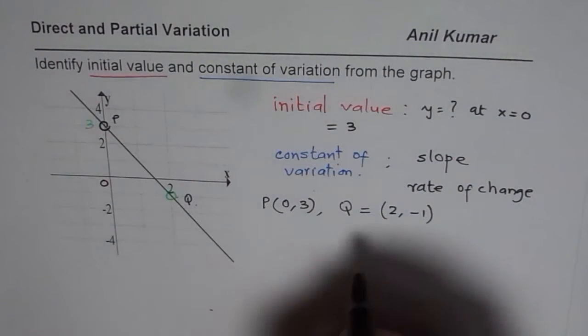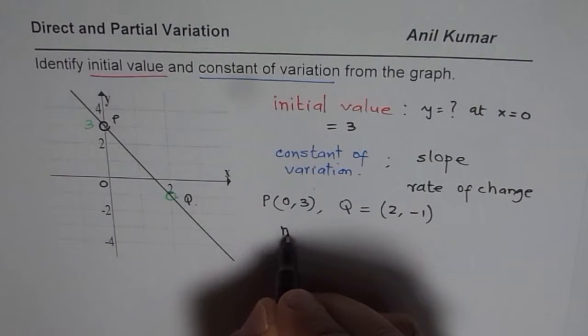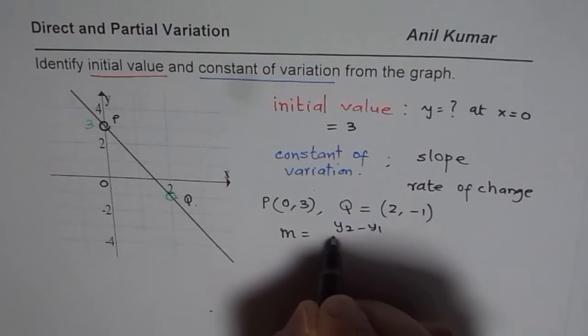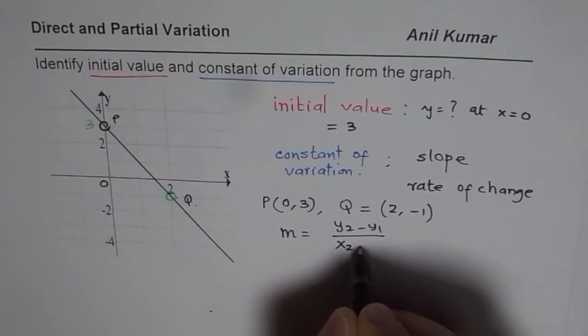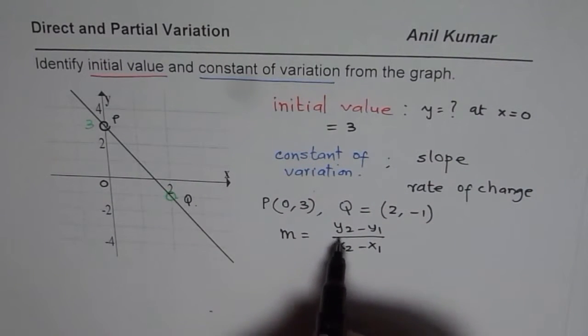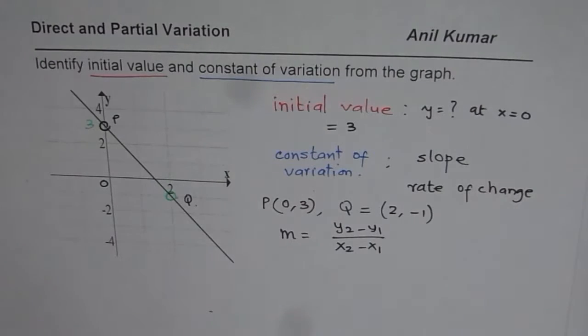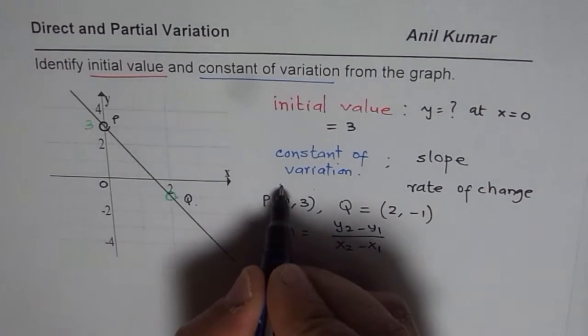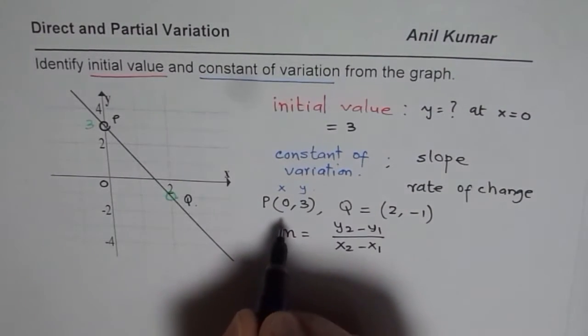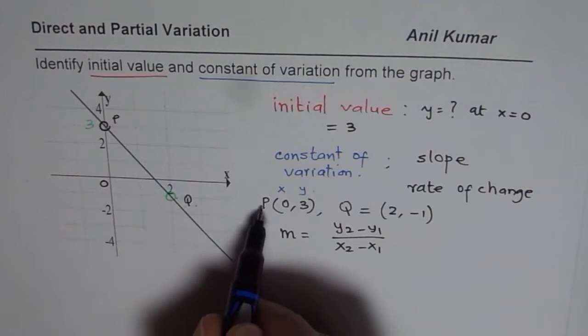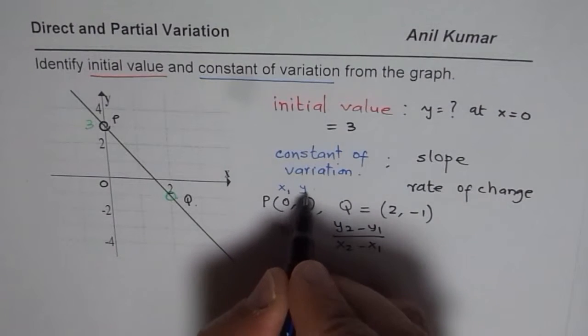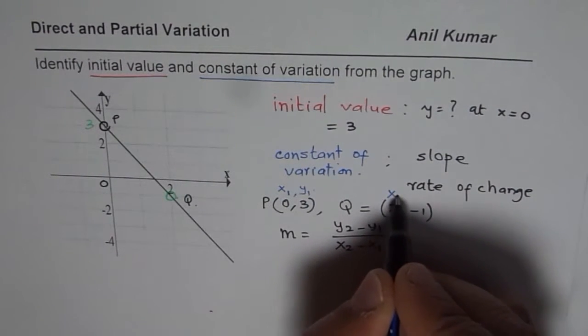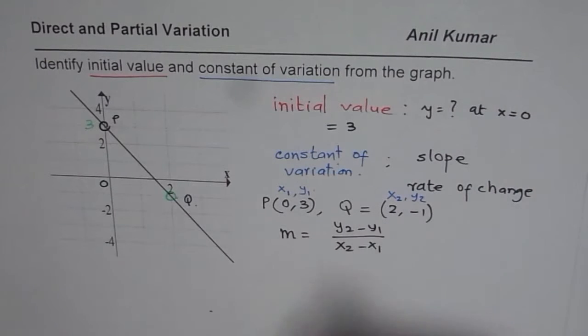So to find the slope, we can write m = (y2 - y1)/(x2 - x1). What do I mean by x2, x1, y2, y1? Whenever you write coordinate points, first corresponds to x, second to y. Let us consider P as my first point, so I will consider them as x1, y1. Q as my second point, x2, y2. That is what I mean.